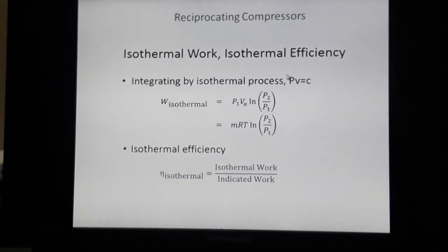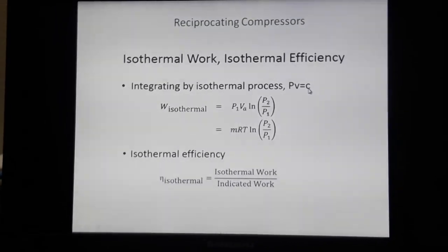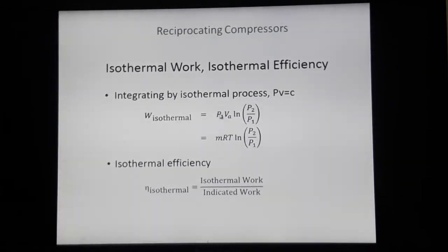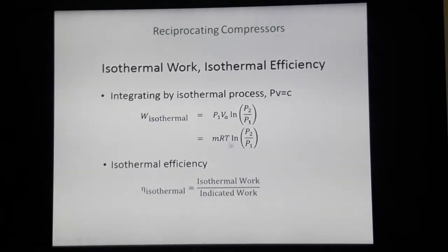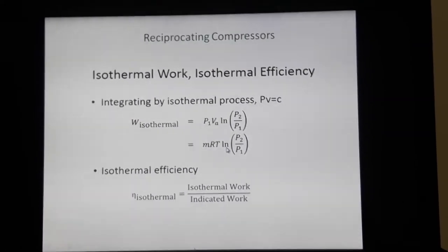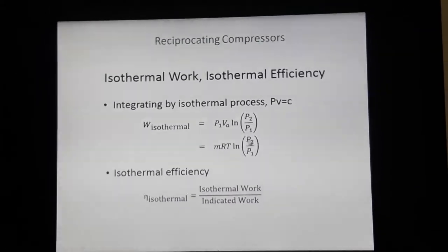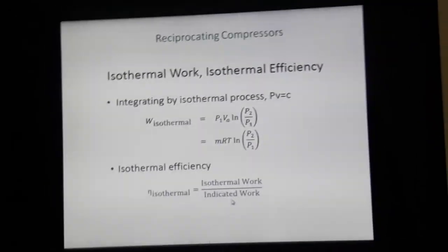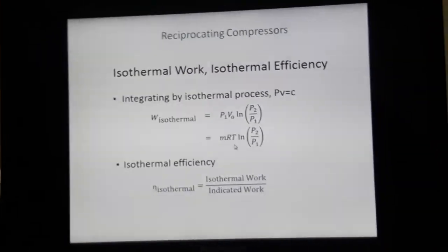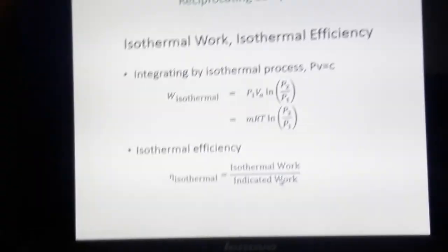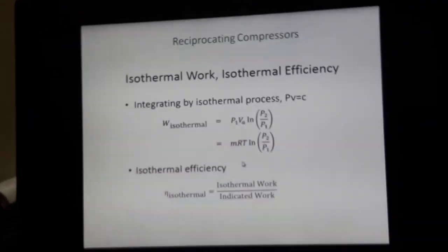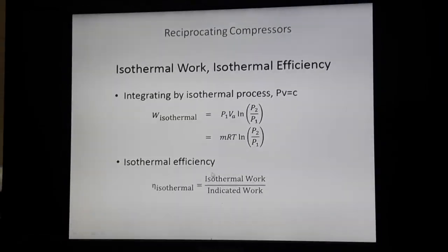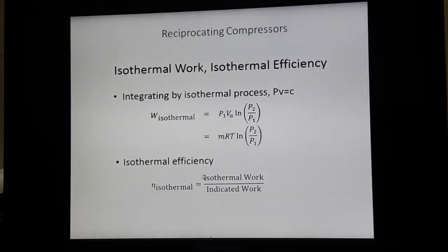The basic equation is PV = C, so the isothermal work is: W = P1·Va × ln(P2/P1). Using the general gas equation, this becomes W = mRT × ln(P2/P1). Isothermal efficiency is the ratio of isothermal work to indicated work: η_isothermal = [mRT × ln(P2/P1)] / [n/(n−1) × mRT1 × ((P2/P1)^((n−1)/n) − 1)].